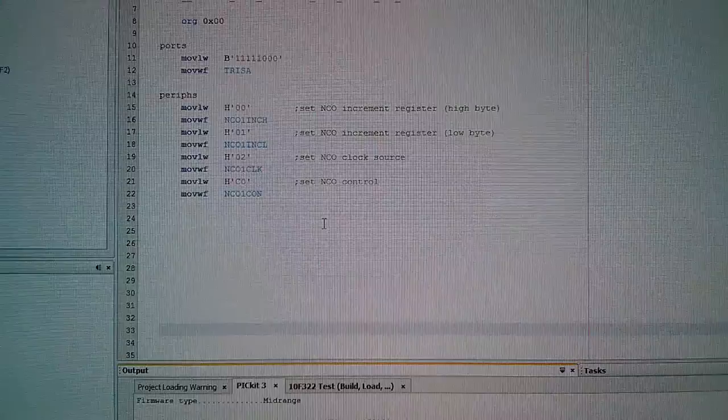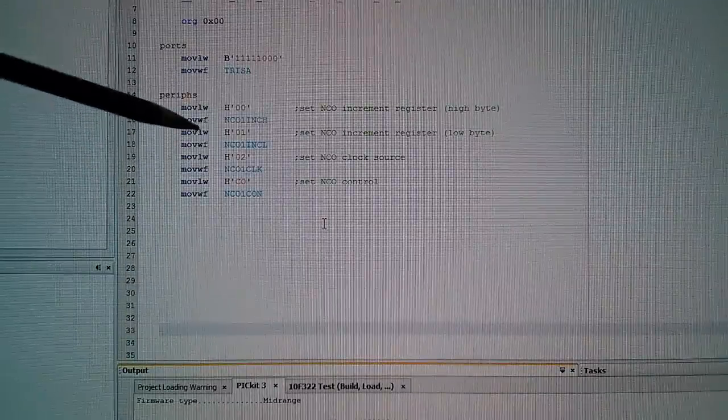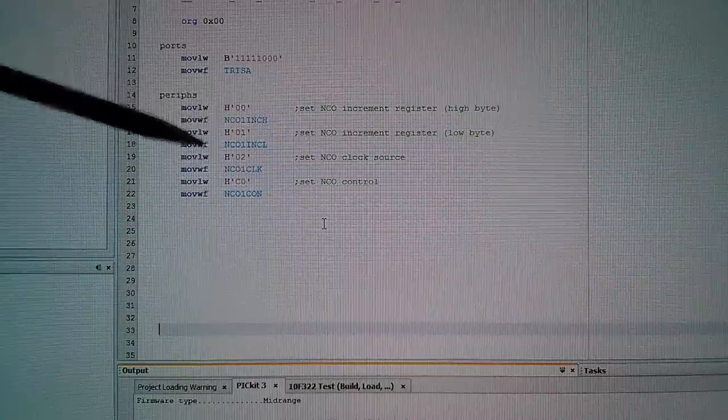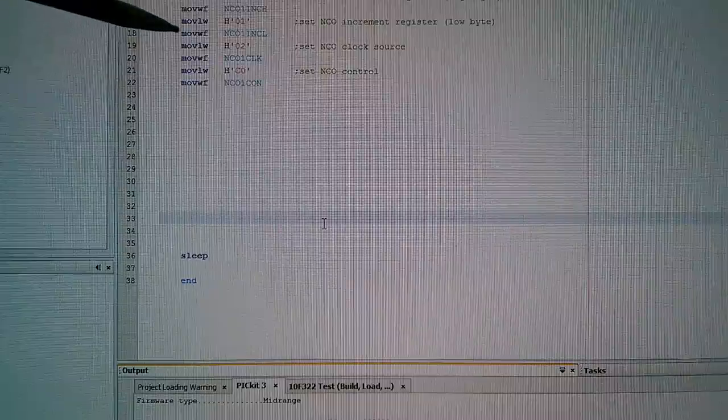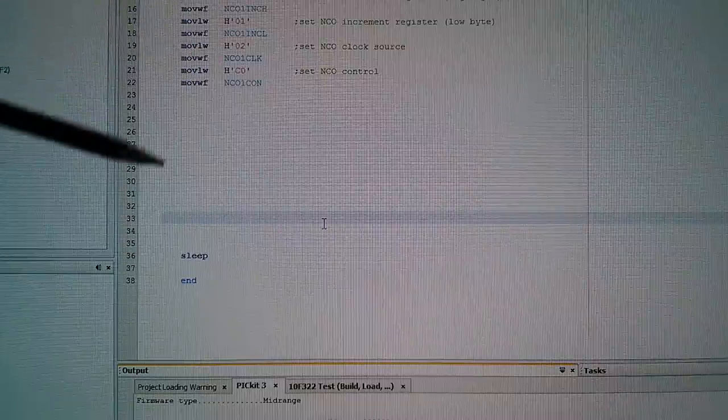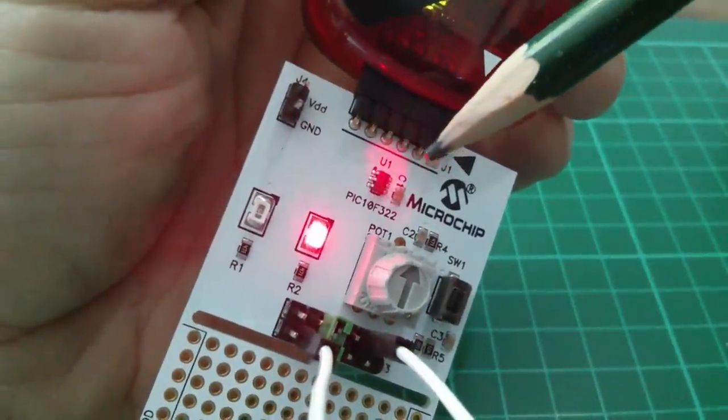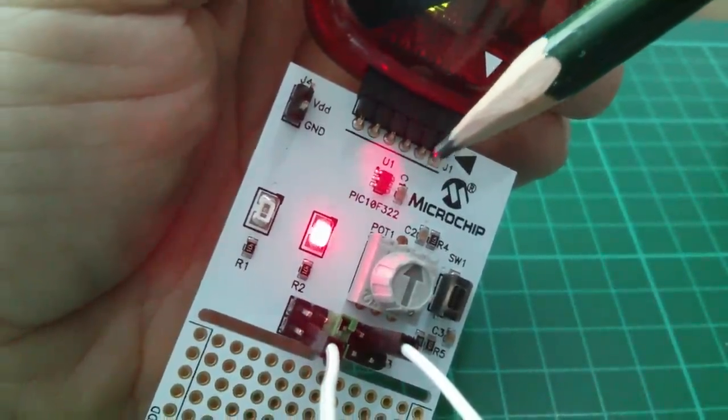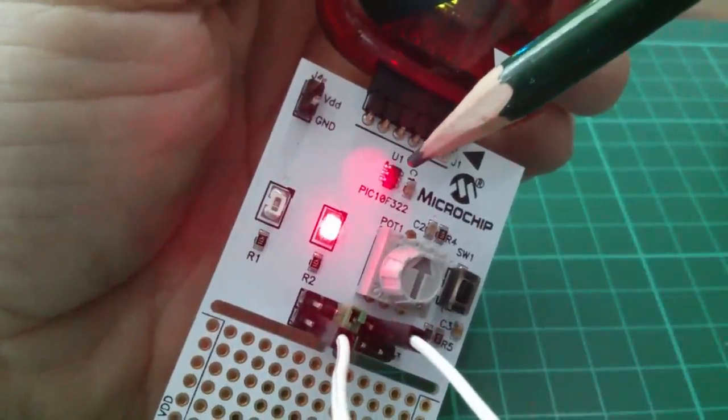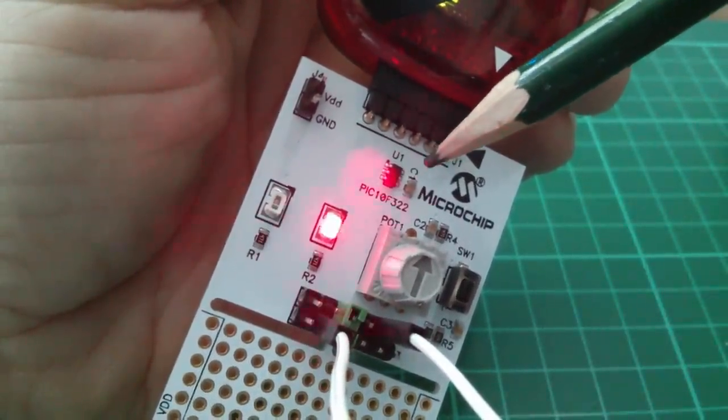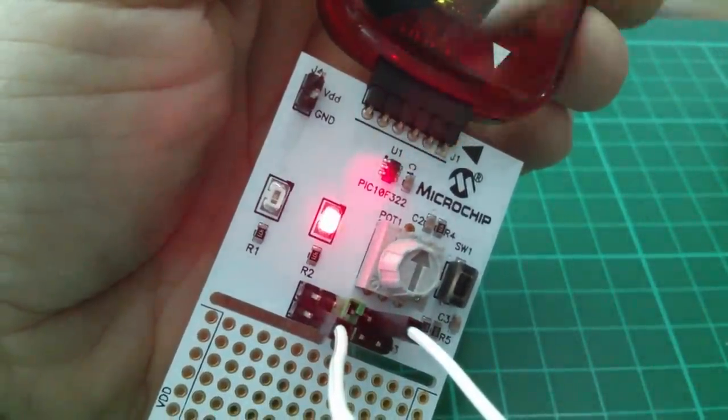In my source code, below the 4 instructions which load hexadecimal values into the NCO registers, below that, just off the screen, is that: sleep. So after the microcontroller sets these registers to these values, it actually completely shuts down. So the microcontroller part of this chip is completely asleep. Nothing is operating. It's just not running at all. The LED is flashing because the high frequency internal oscillator is still operating, and the numerically controlled oscillator hardware is still functioning. The peripherals are still awake. The CPU is asleep.